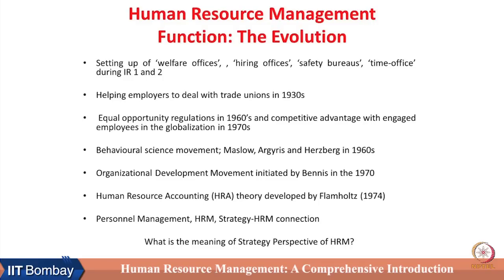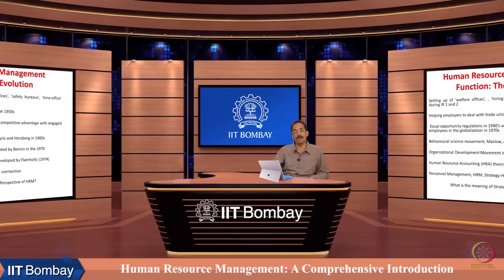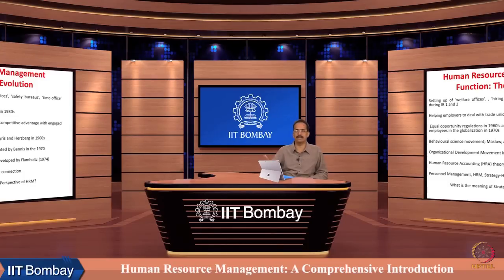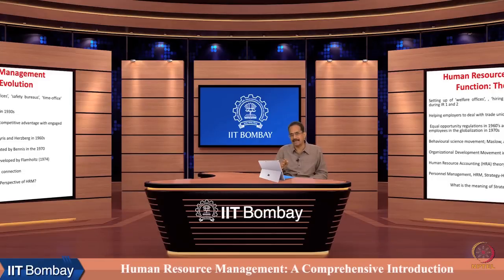In the mid-1970s, Flamholtz started a significant process of bringing human resources under the ambit of some form of accounting. It was not typical financial accounting, but the Flamholtz effort was aimed at giving monetary value to human resources. After Flamholtz's work, many other human resource accounting models were developed, such as the Chow and Lai model and the Jaggi model of human resource accounting, giving a push to examine the HR function's impact in more tangible ways.